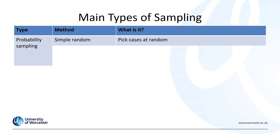The second type of probability sampling is systematic. Again you have this list of the population — your sampling frame — and you pick every nth case. So you might pick every fifth case on that list, sending out your questionnaire or contacting every fifth person. You could use the number eight and pick every eighth person on that list. Rather than picking randomly, you're doing it systematically — picking every fifth, seventh, or ninth case, whatever number you decide.